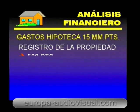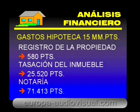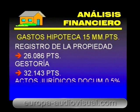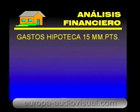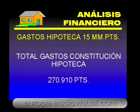La realización de los trámites indicados anteriormente conlleva el pago de una serie de gastos derivados de la constitución del préstamo hipotecario. Los importes de cada uno de estos gastos están en función del importe del préstamo. Para seguir con el supuesto anterior, estos son los costes para una hipoteca de 15 millones. El importe total de los gastos de constitución para nuestra hipoteca de 15 millones de pesetas es de 270.910 pesetas.